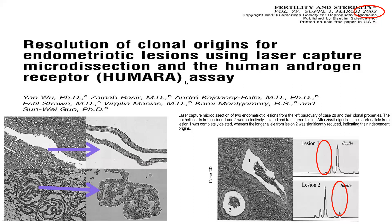There was always a question whether endometriotic lesions, like cancer, are monoclonal or polyclonal. We first used microdissection on glandular epithelial cells. By microdissecting these glands, you can get all the epithelial cells. With this, we resolved that endometriotic lesions are actually monoclonal — each focus is monoclonal — but different foci probably come from different clones.